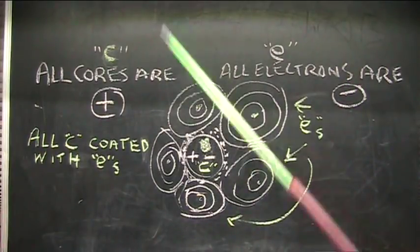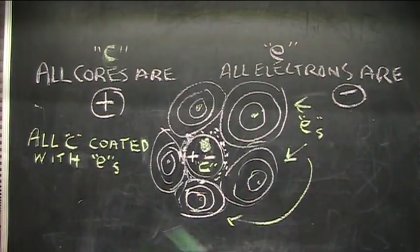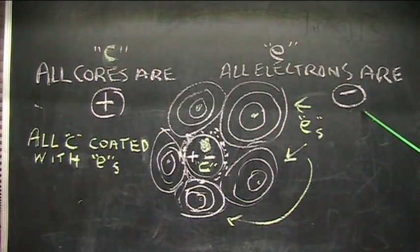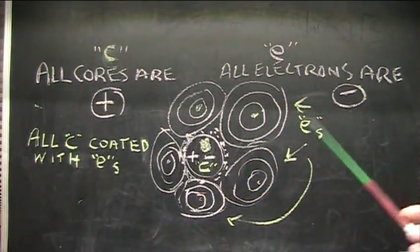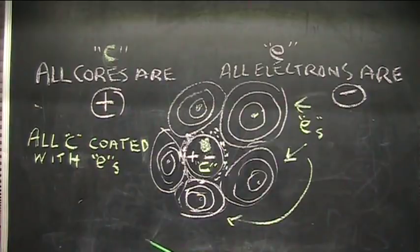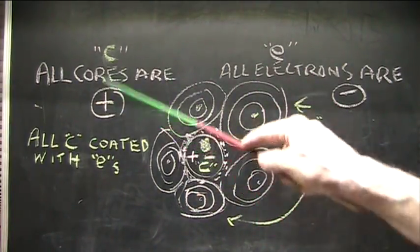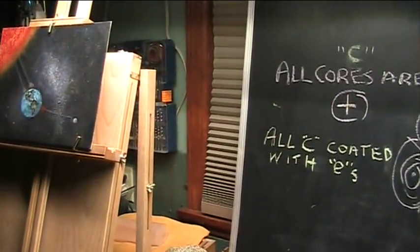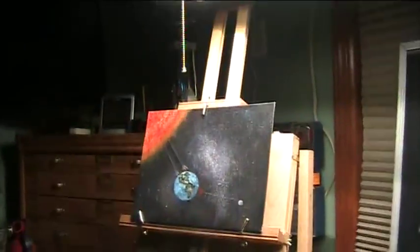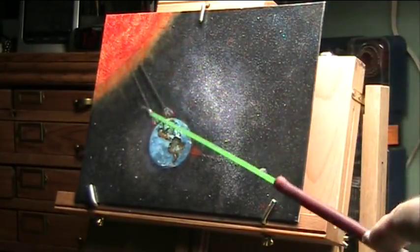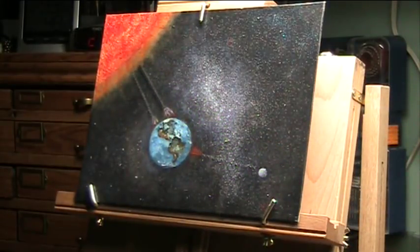There is nothing that does not contain negatives. Every single thing has negatives because every single positive is surrounded by them, and every single negative is a negative. There's your gravity: the positive sucks negatives in, and it sucks in other things that have negatives and have cores. Everything is attracted to everything strictly because negatives are attracted to positives, and every positive is surrounded by negatives. Negatives can float freely through space.